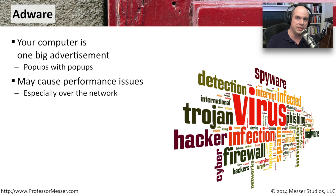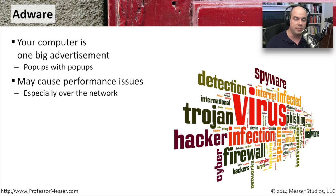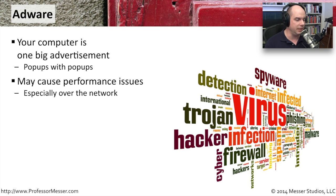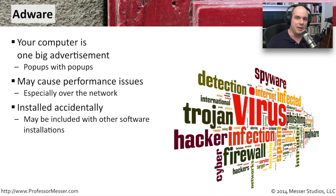This can also cause performance issues for you, having this information come across the network. This malware is probably communicating back to the mothership — the things that you may have clicked on, the things you may have seen. There can be performance issues associated with your computer once this malware is on it presenting these ads, so you may see things slow down just a little bit.